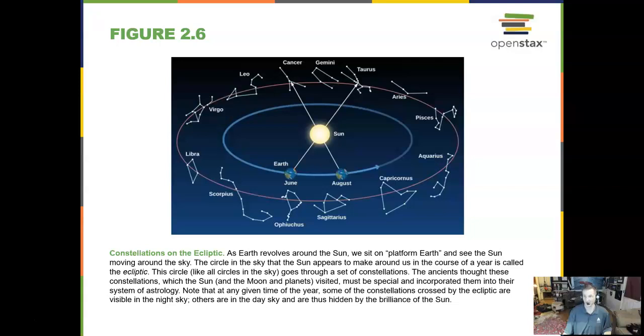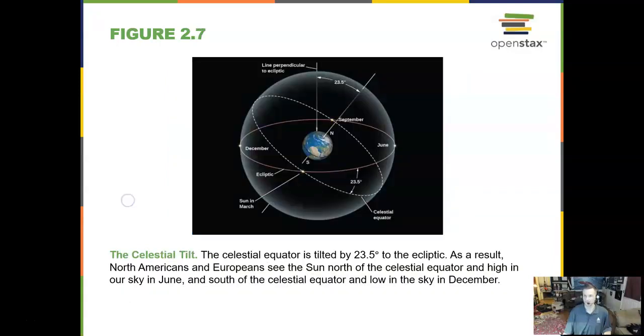And along a path known as the ecliptic, we have the zodiacal constellations that you might be familiar with about a horoscope. So we have those along here. And those are the constellations where the sun and moon go through throughout the year.